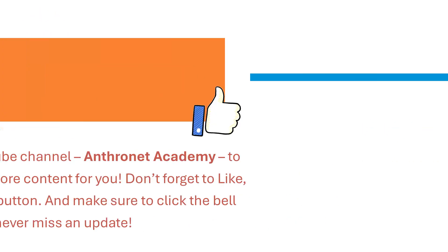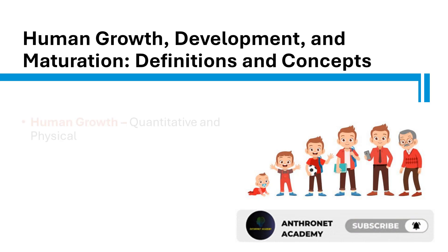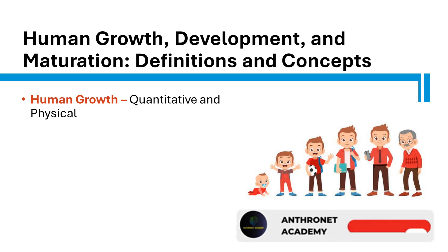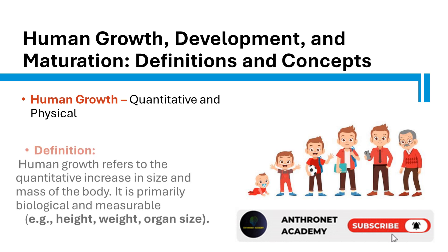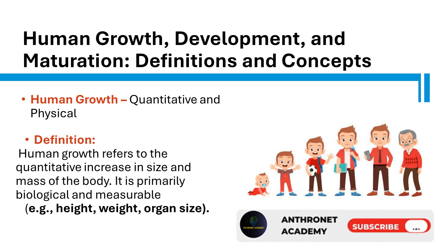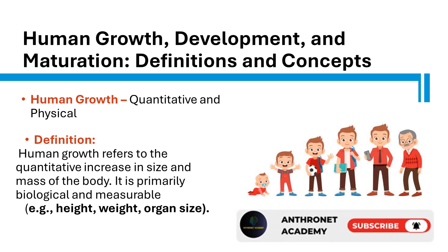Human growth, development, and maturation — definitions and concepts. Human growth refers to the quantitative increase in size and mass of the body. It is primarily biological and measurable, e.g., height, weight, and organ size.